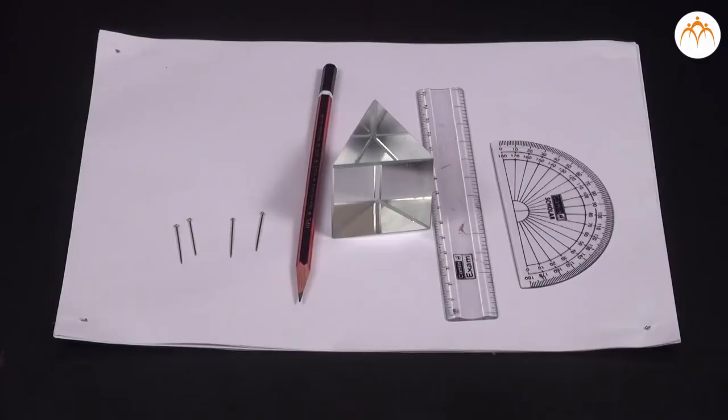We need a prism, drawing board, sheet of white paper, paper pins and drawing pins. Fix the sheet of white paper on drawing board with the help of drawing pins.